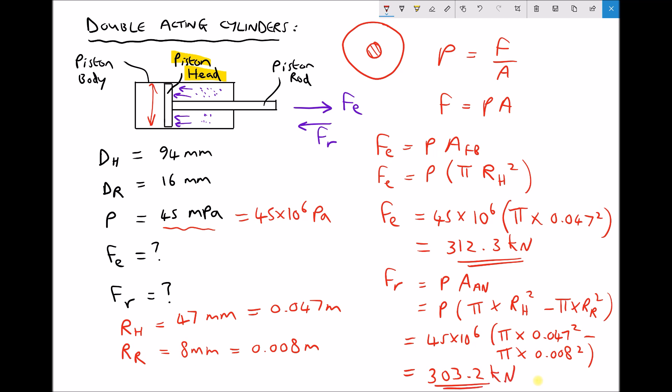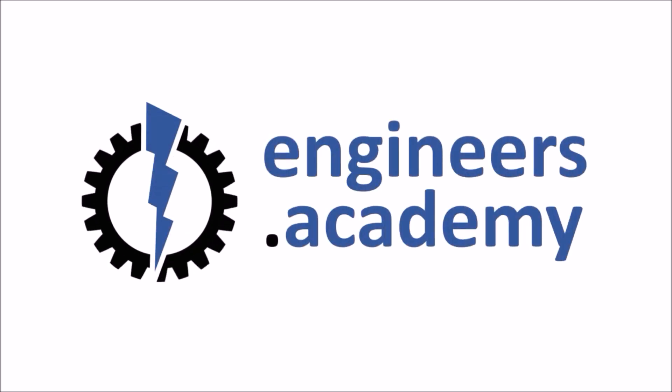So as we can see here, we have a force on extension of 312.3 kilonewtons and a force on retraction of 303.2 kilonewtons. It is worth mentioning that if the diameter of the piston rod increases, then the difference between the force on extension and the force on retraction is going to be greater.